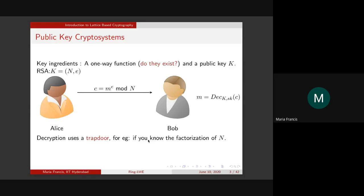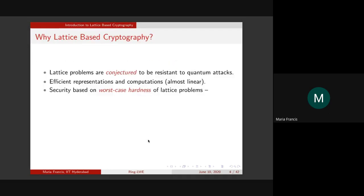A lot of these classical cryptosystems, including RSA, break when you have quantum computers, because factoring is considered easy on a quantum computer. And going forward, quantum computers are no longer an 'if' but a 'when'. This is why alternatives are being explored that are resistant to quantum computer attacks. Lattice-based cryptography is considered one viable practical option, because its security is proved by the underlying hardness of lattice problems, which are conjectured to be resistant to quantum attacks.